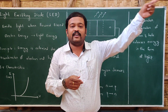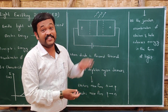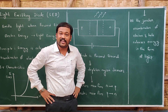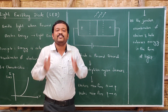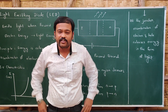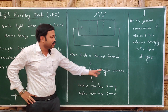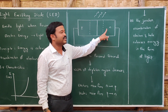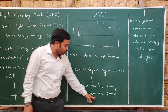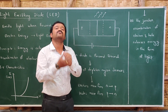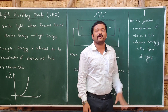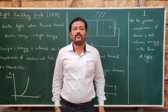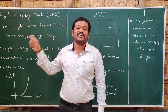In an LED, the PN junction is forward biased — P is connected to positive and N is connected to negative. When forward biased, the depletion region decreases and majority charge carriers begin to move: electrons move from N to P and holes move from P to N. At the depletion region, recombination of electrons and holes takes place, releasing energy in the form of light. This recombination and release of light is the principle of light emitting diodes.